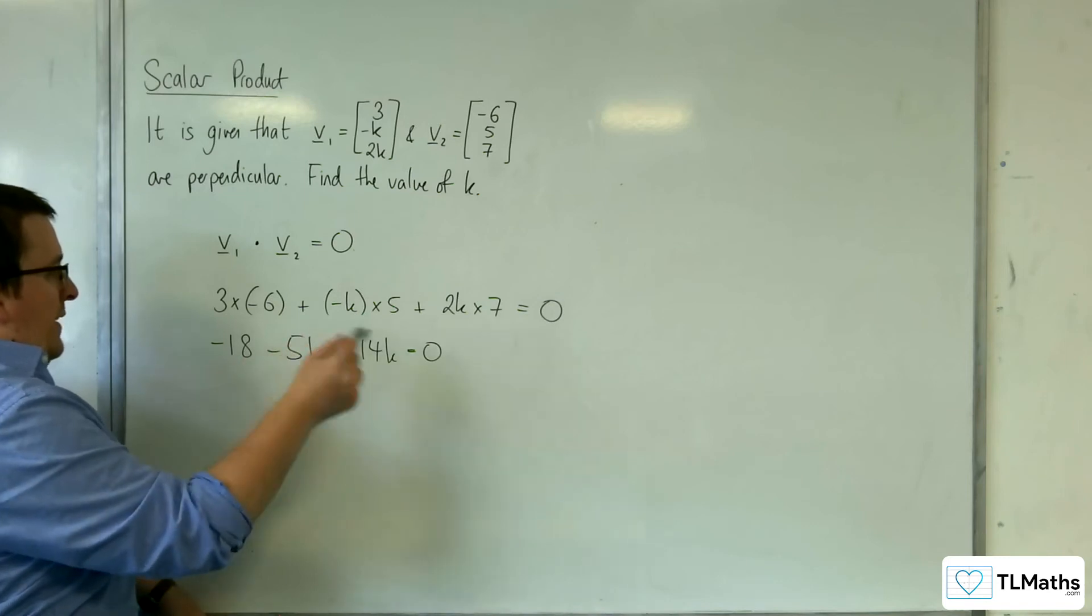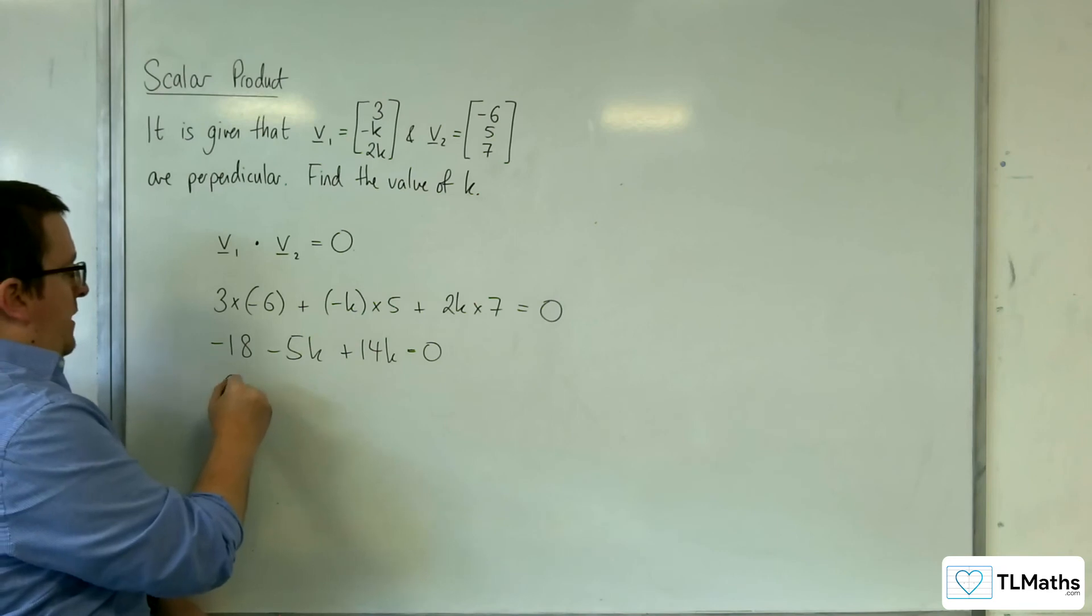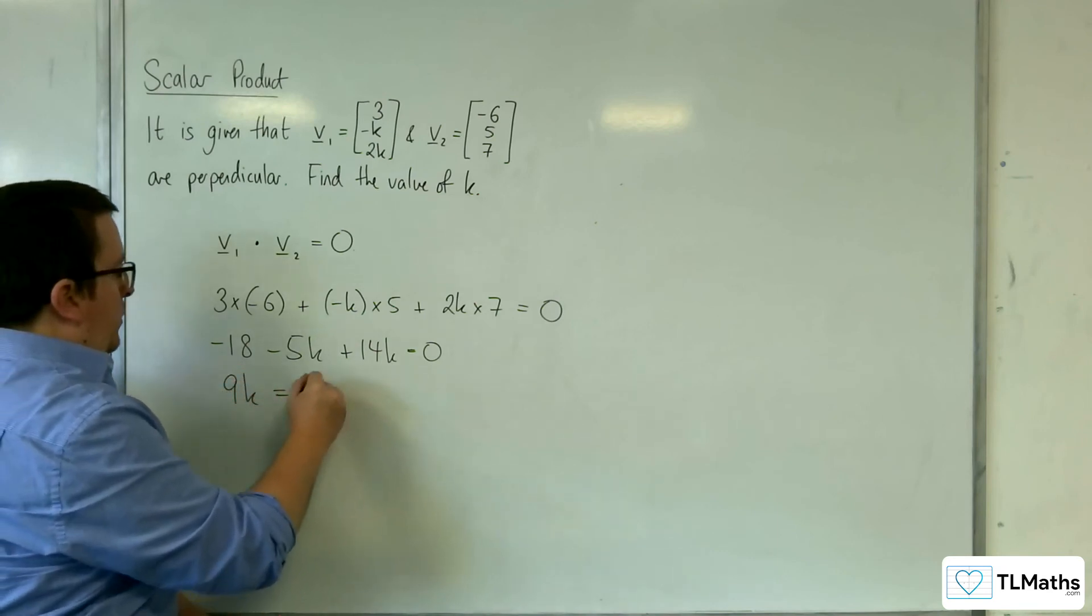So, if I add 18 to both sides, we've got minus 5k plus 14k, which is 9k, equals 18.